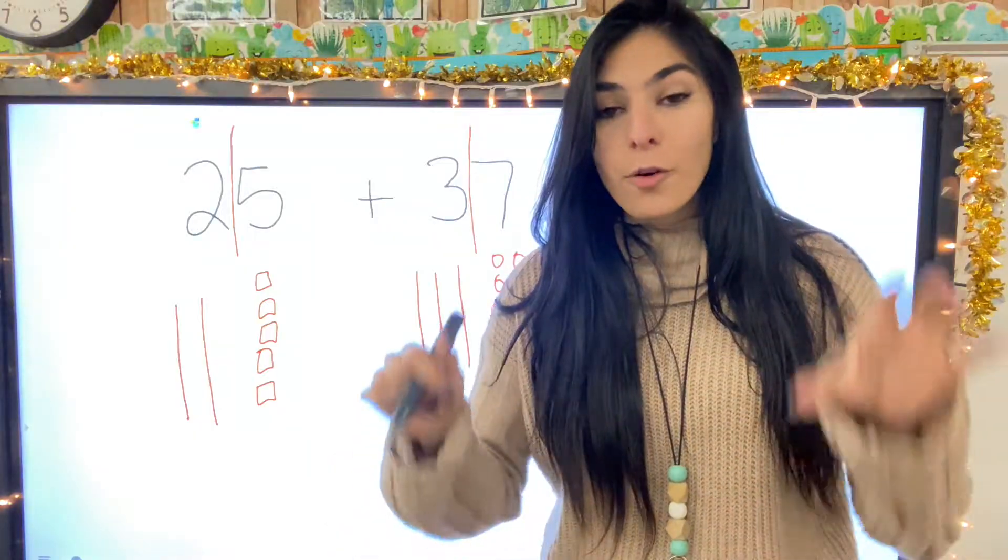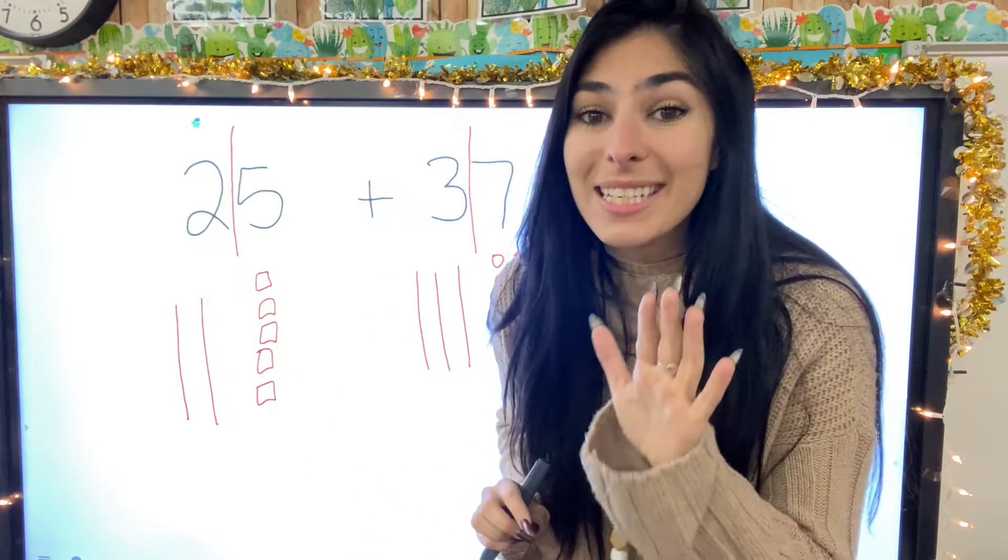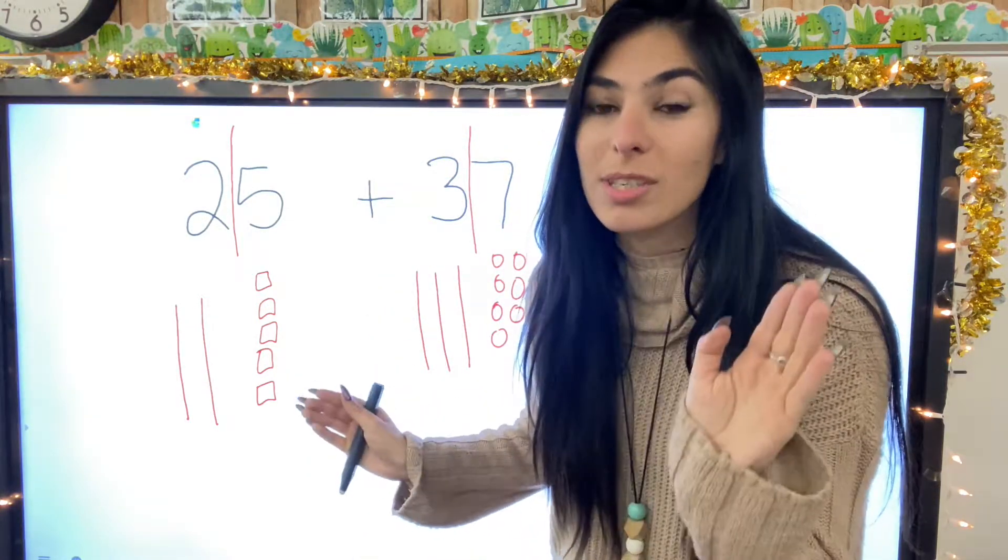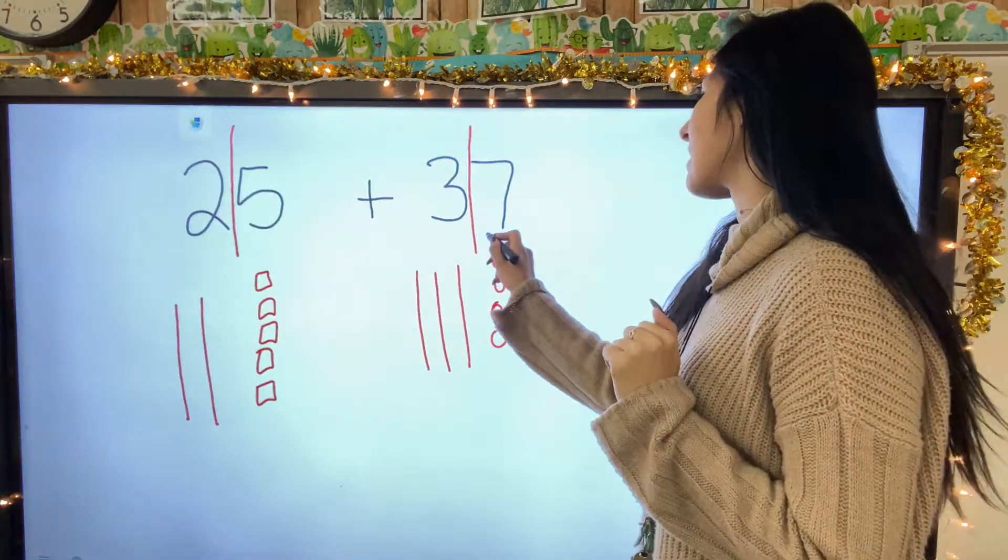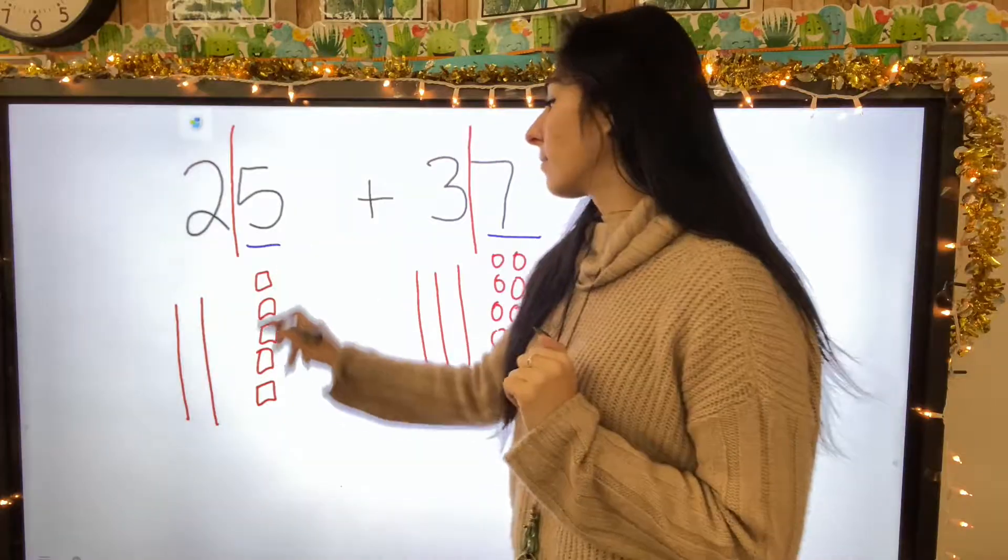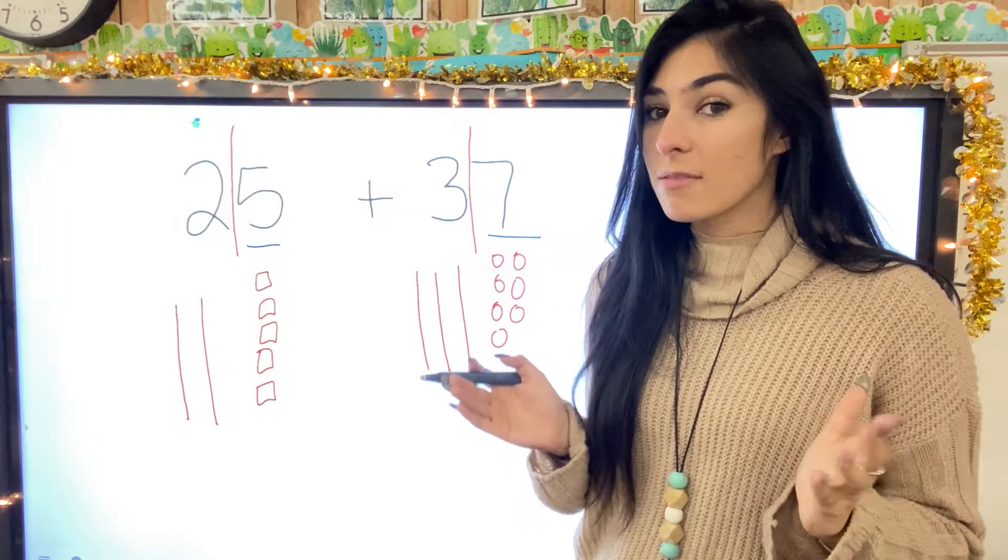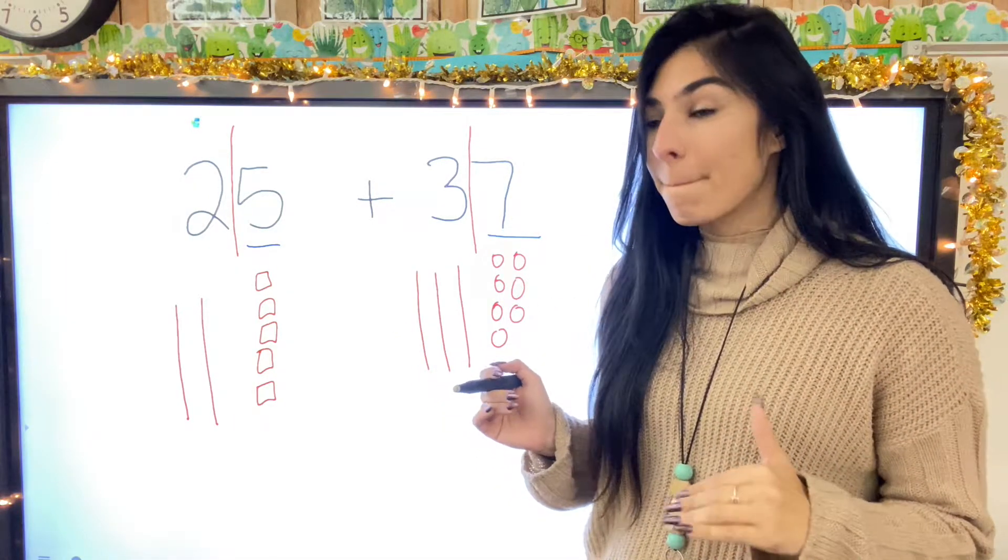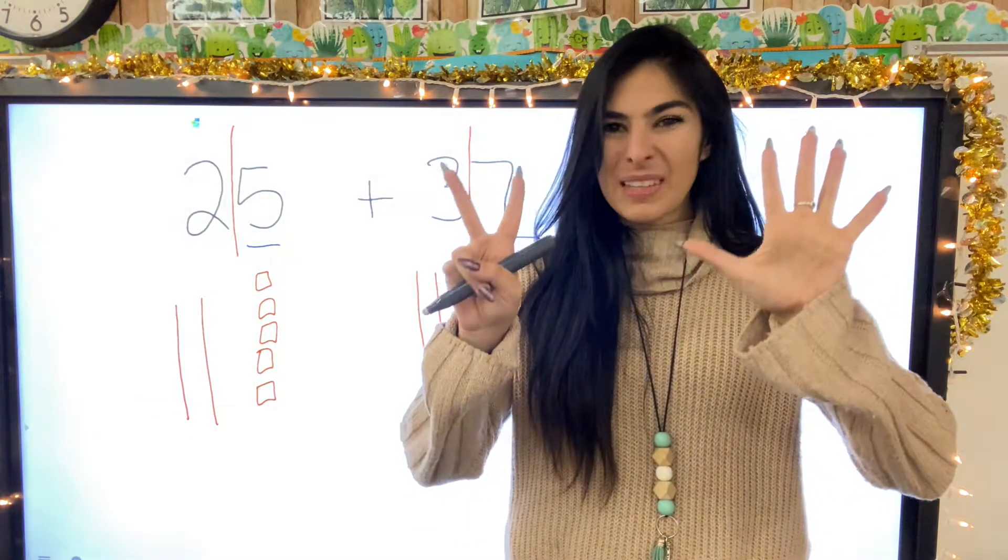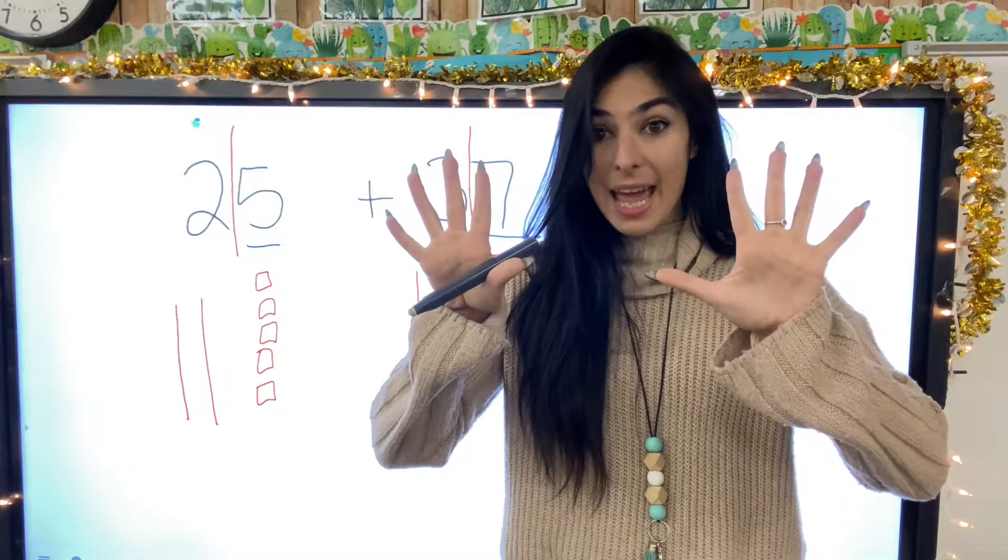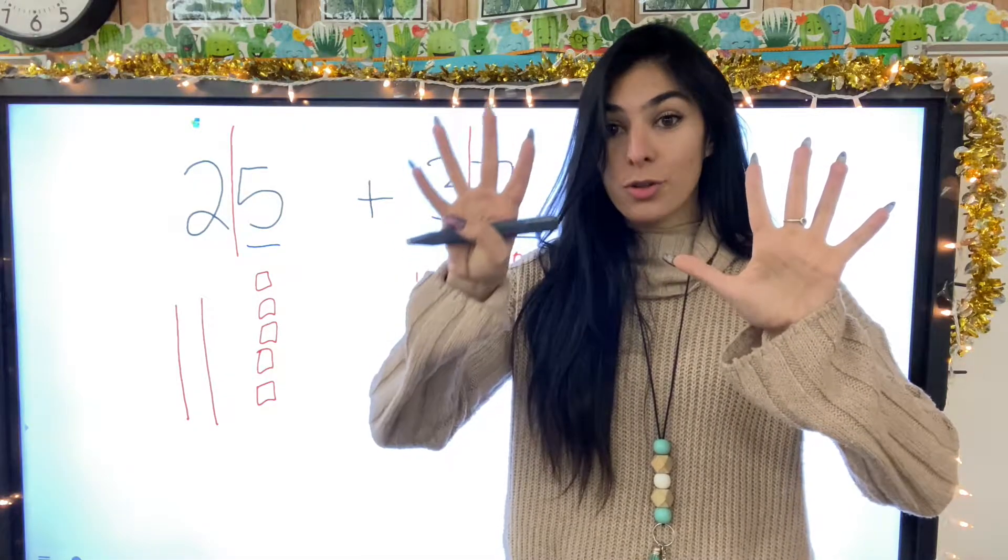From here, I'm going to look for a secret ten. That means there's a ten hiding in the ones. You just have to put them together. So if I look at my ones, which is the seven and the five, which one is closer to ten? Five or seven? Seven is closer to ten.